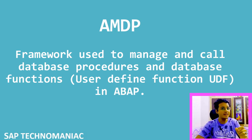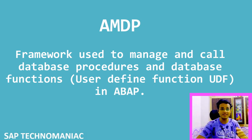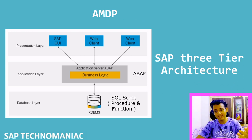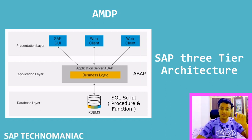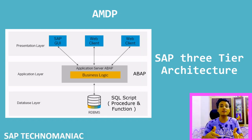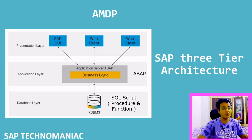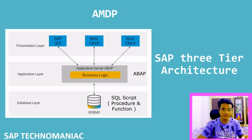AMDP is a framework to manage and call database processors and functions from ABAP itself. In SAP's three-tier architecture, we have the presentation layer, application layer, and database layer. In the database layer we can have any database — if SAP provides HANA database, we can also have Oracle, DB6, or IBM databases.